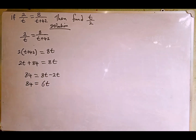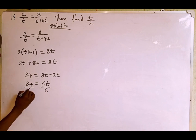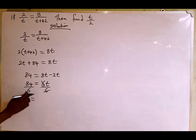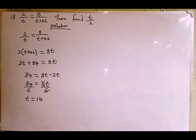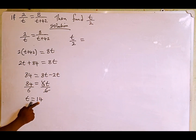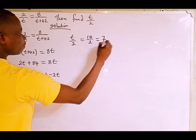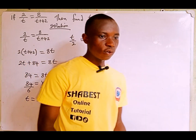We are looking for the value of t, so we divide both sides by the coefficient of t, which is 6. The 6 cancels, and t equals 84 divided by 6, which gives us 14. Now, the question asks for the value of t over 2, so t divided by 2 equals 14 divided by 2, which equals 7. Therefore, the value of t over 2 is 7. Thanks for watching!